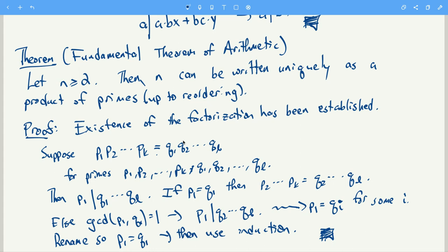And we have to show that the same primes occur and the same number of times. Basically what we have to do is, if we can show that p1 is equal to one of the primes on the right-hand side, then we can cancel those off, and then apply induction.